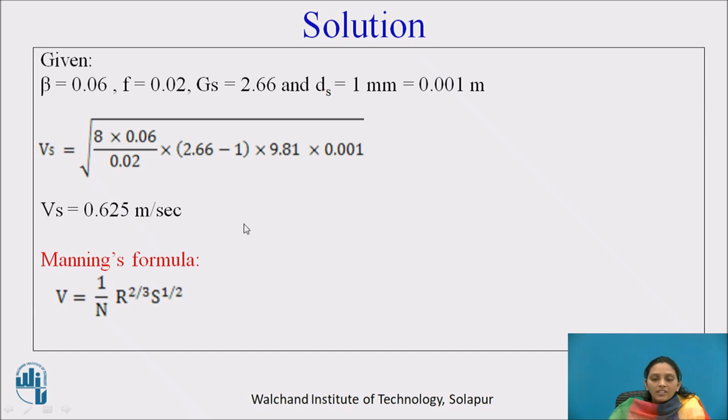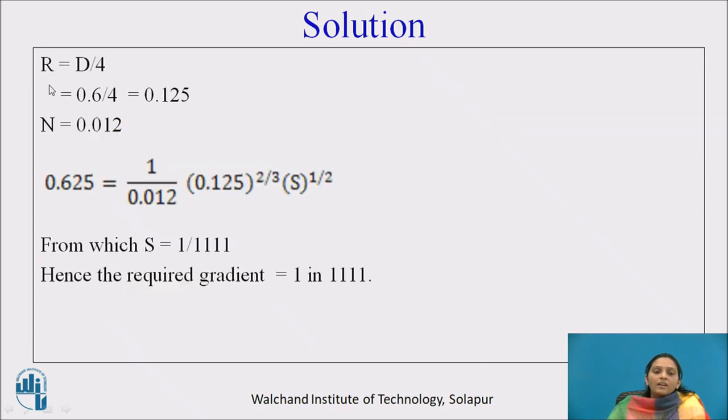Now it is given that rugosity coefficient, so we have to use Manning's formula. R, as the sewer runs half full, R equals D by 4. Diameter is 0.6 meter divided by 4, so R is 0.15 meter. N is given, that is 0.012. Put R, N, and self-cleansing velocity in the equation. Only the slope is unknown. Find out slope from the equation: slope will be 1 upon 1111.